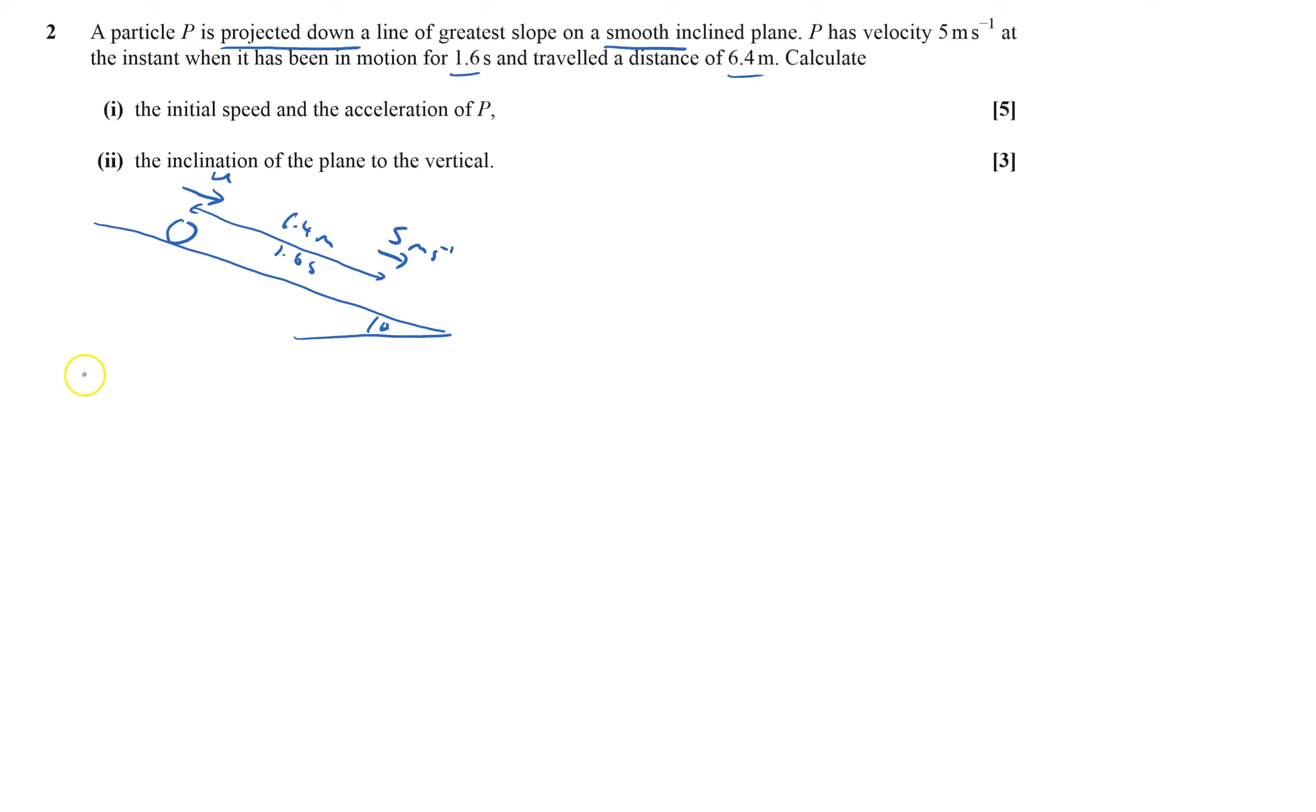This is a SUVAT type question. We know s is the distance which is 6.4, we know time is 1.6, the initial velocity is what we want to find. We know the final velocity is 5 and we also want to find the acceleration.